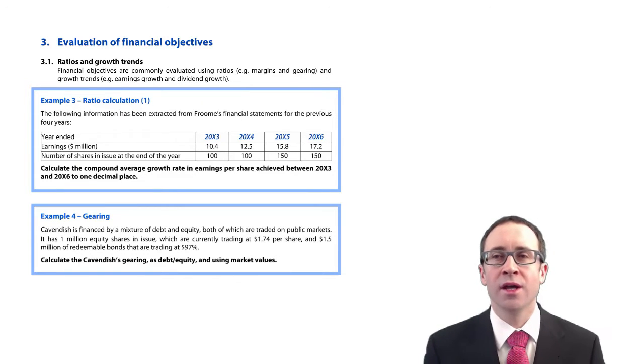If we're thinking about financial objectives, that's much more geared towards for-profit entities. For-profit entities are clearly trading to try and make a profit on an annual basis and see that profit grow on an annual basis.